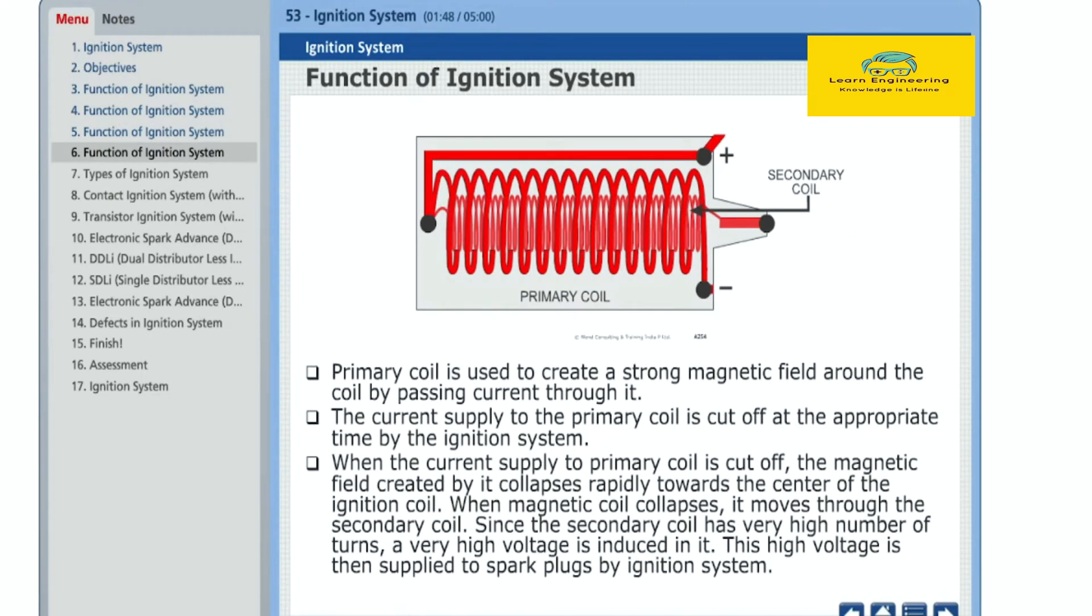Primary coil is used to create a strong magnetic field around the coil by passing current through it. The current supply to the primary coil is cut off at the appropriate time by the ignition system. When the current supply to primary coil is cut off, the magnetic field created by it collapses rapidly towards the center of the ignition coil.